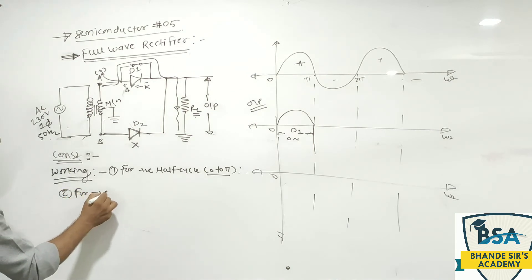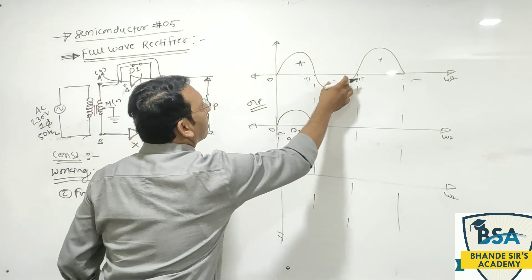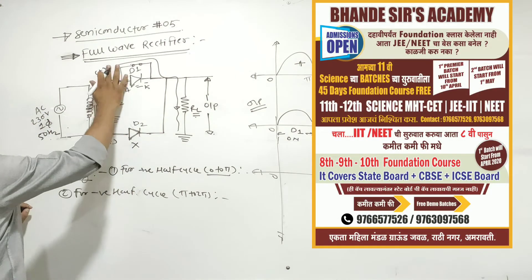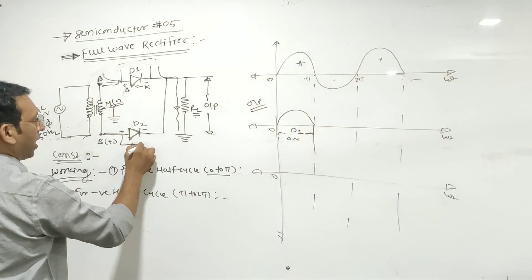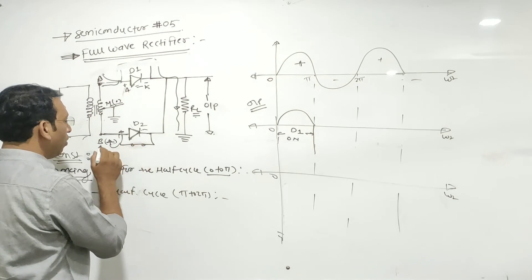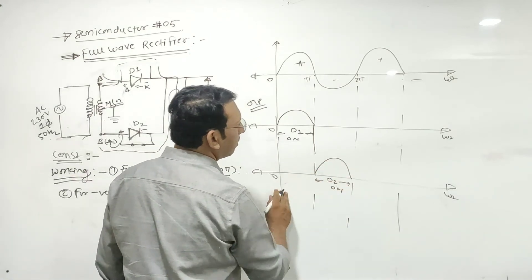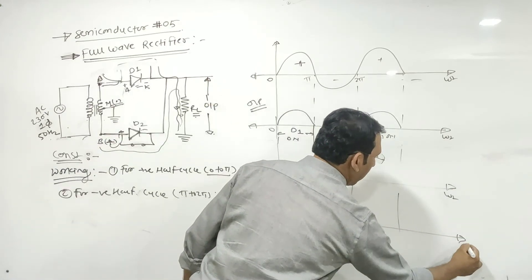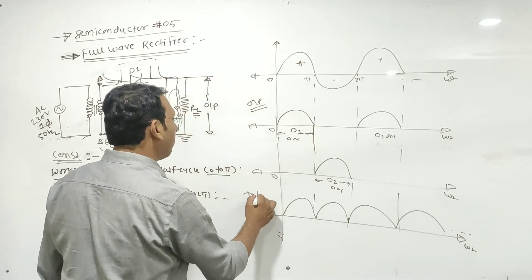For negative half cycle (π to 2π): Point B will become positive with reference to M — point A will not play a role. Positive is connected to the positive of diode D2, hence diode D2 will become forward bias, acts as a closed switch, and current starts flowing from diode D2 through load resistance RL. So D2 is ON. This cycle repeats: D1 ON, D2 ON, D1 ON, D2 ON — and that is our total output.